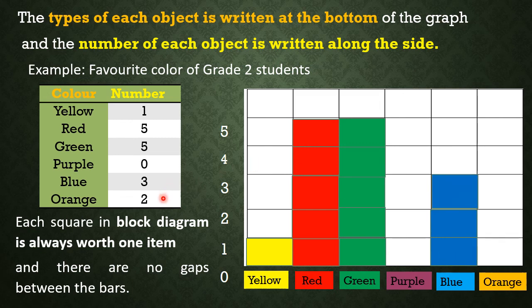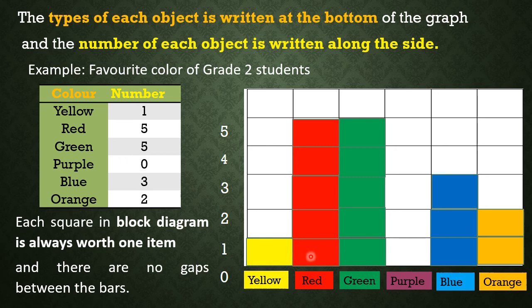2 students like orange, so that means we will color 2 blocks. So this block diagram shows the number of students that like each color: 1 student likes yellow, 5 students like red, 5 students like green, no students like purple, 3 students like blue, and 2 students like orange.